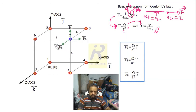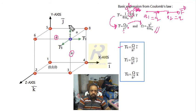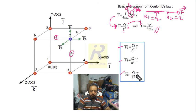F₆ is the force on charge #7 due to charge #6. The distance is a, so F₆ = ω/a² · î, acting along the x-axis. Similarly, F₃ (charge #3 is directly above) acts vertically upward along the y-axis: F₃ = ω/a² · ĵ. And F₈ (charge #8) acts along the z-axis: F₈ = ω/a² · k̂.